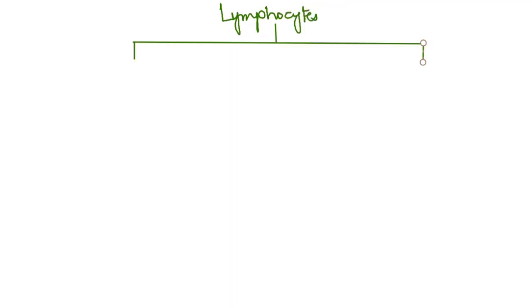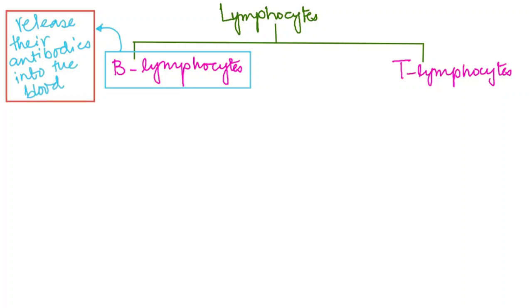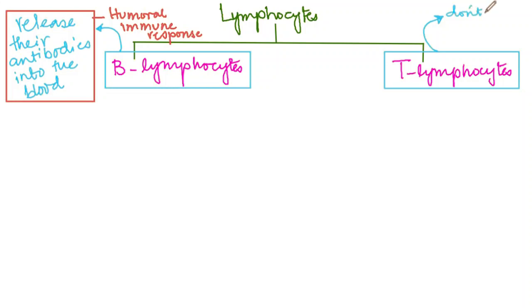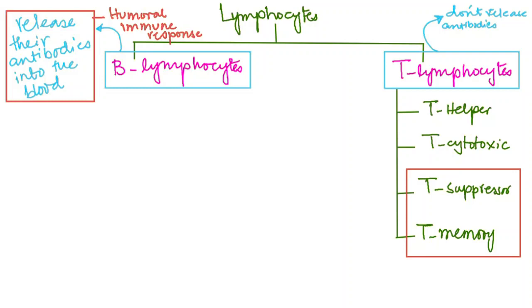Now we will learn the role of lymphocytes. Lymphocytes are white blood cells that play a very important role in the formation of antibodies. They are of two types: B lymphocytes and T lymphocytes. B lymphocytes release their antibodies into the blood — this is called the humoral immune response. T lymphocytes also produce antibodies but never release them; the antibodies remain attached to their outer surface. T lymphocytes are of four types: T helper, T cytotoxic, T suppressor, and T memory.